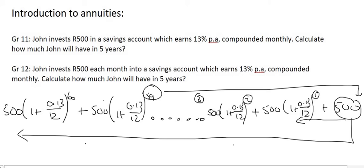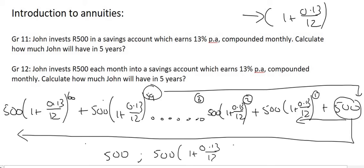Can you see that that is actually a geometric sequence where the common ratio is this? Because if I take the number 500 and then I times it by that, then I'm going to end up with 500(1 + 0.13/12).